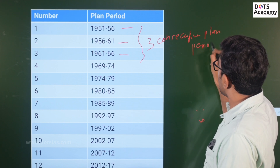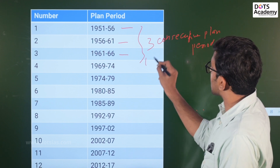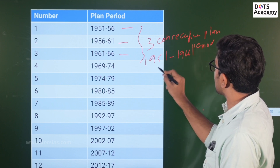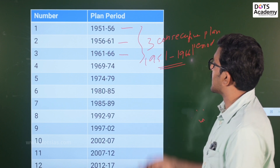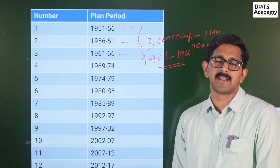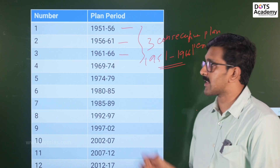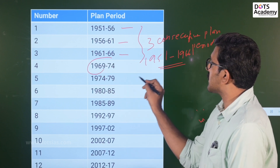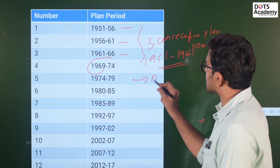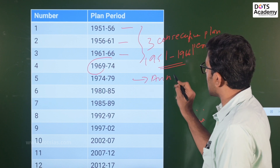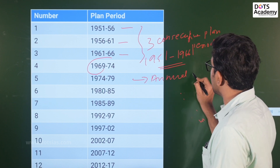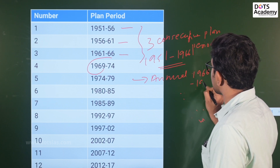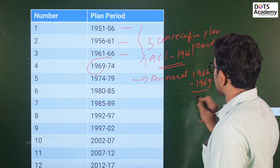Now, in 1951 to 1966, three five-year plans were implemented. After the third plan, there was a gap in 1966, and annual plans were introduced from 1966 to 1969.